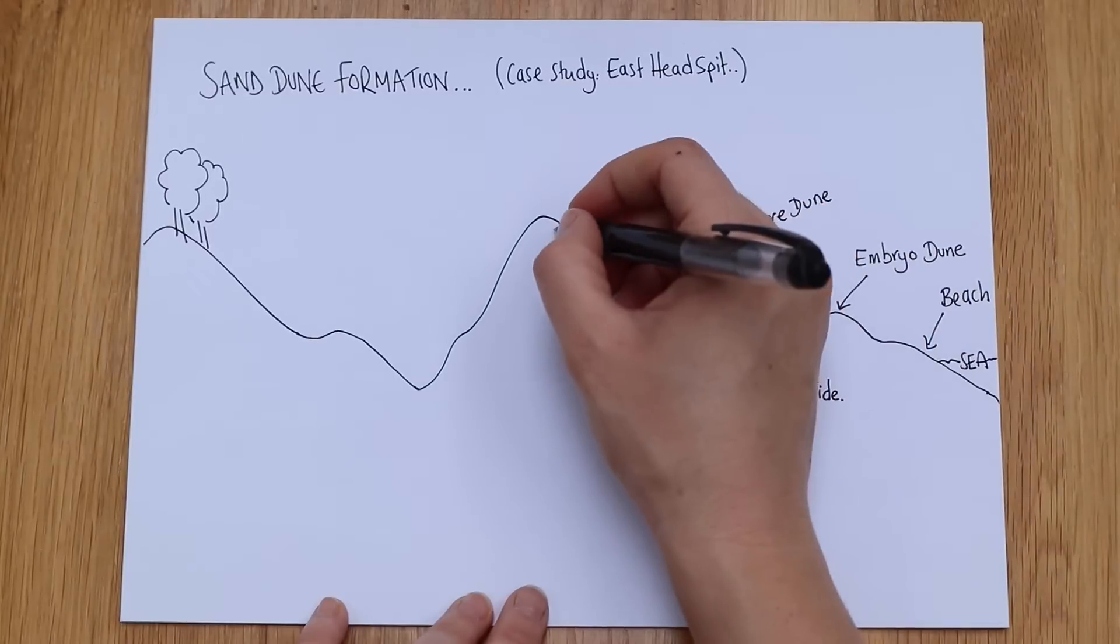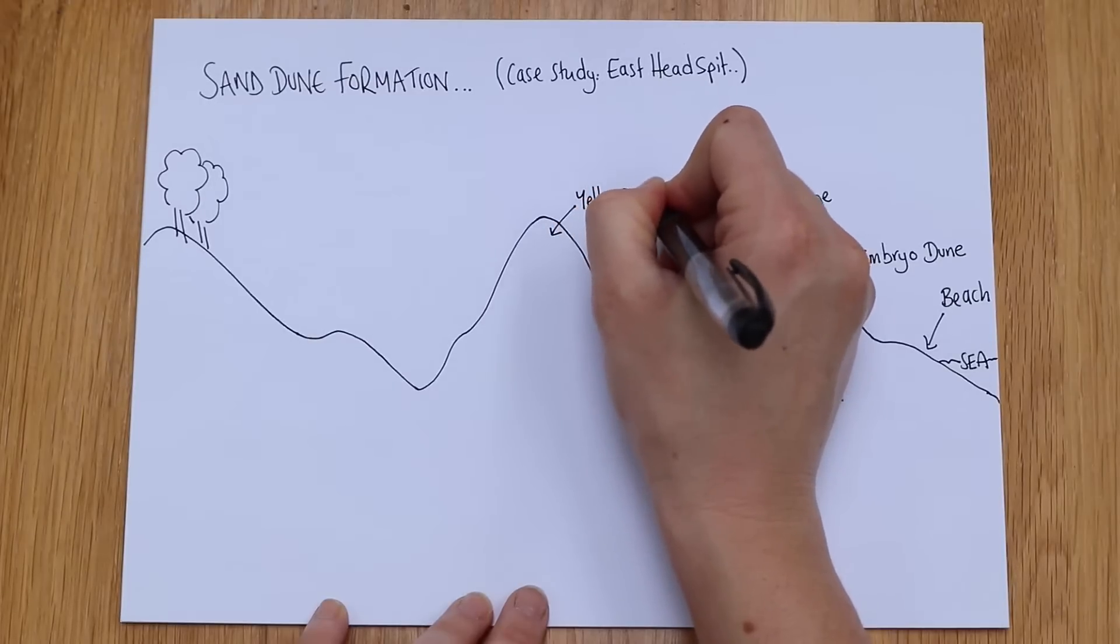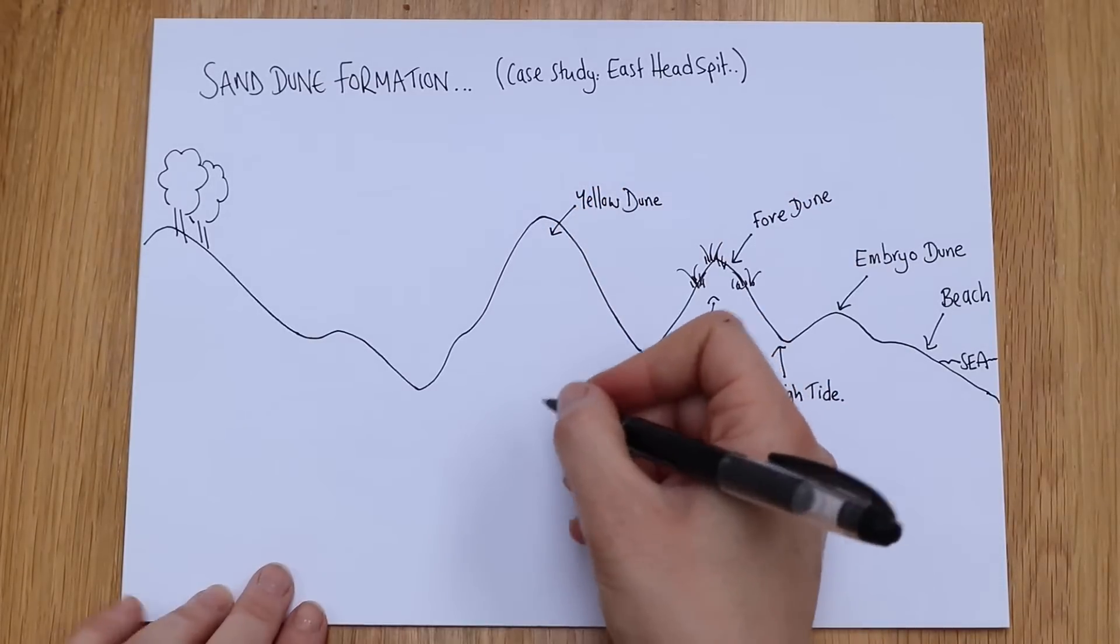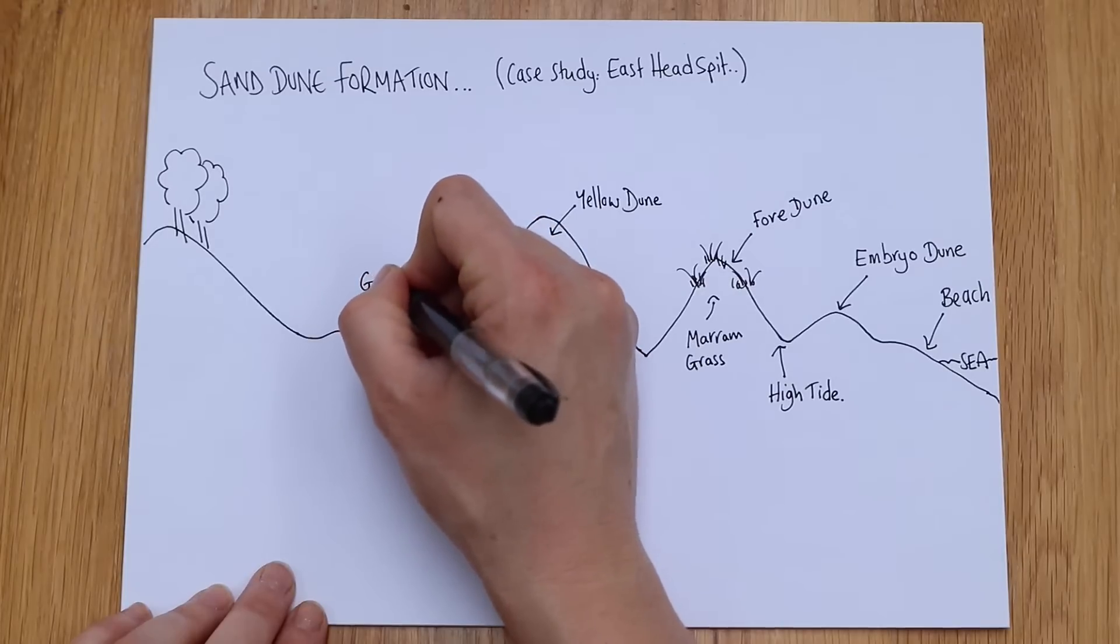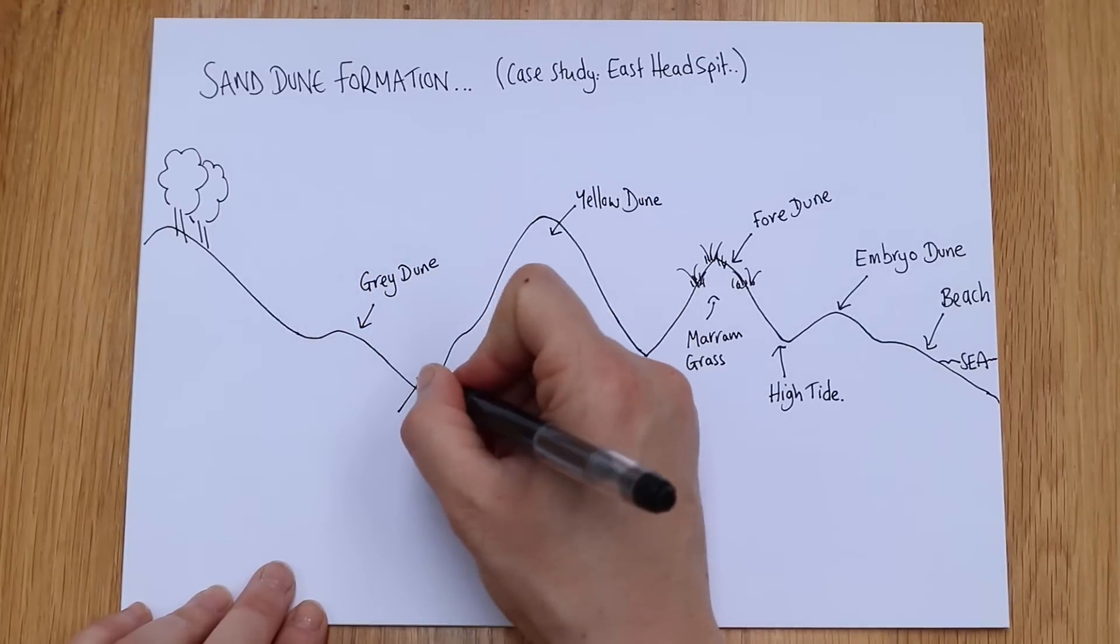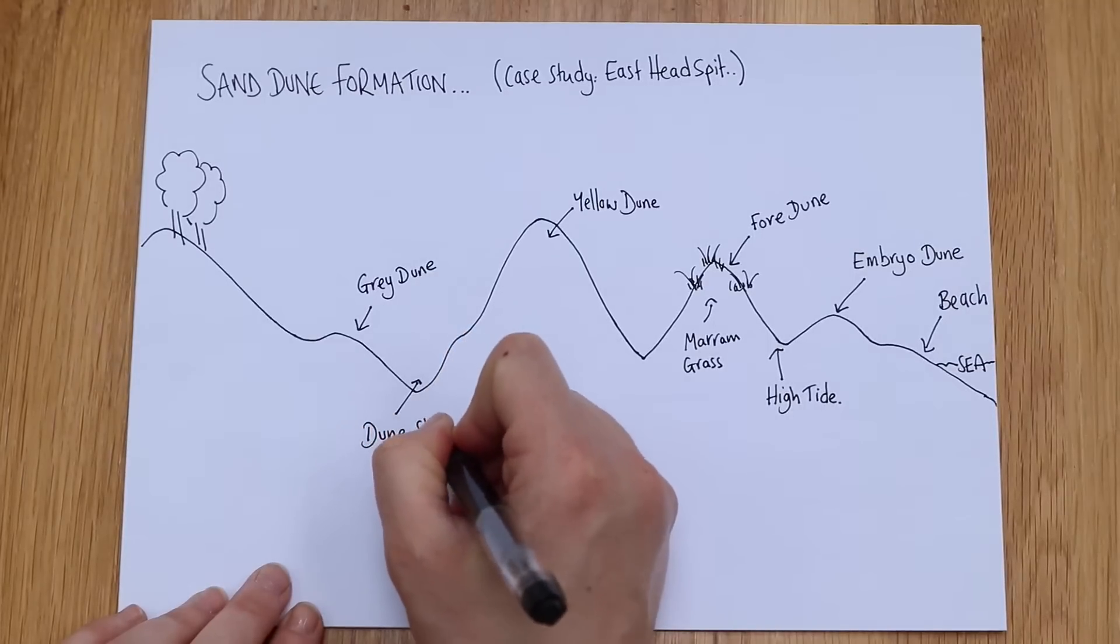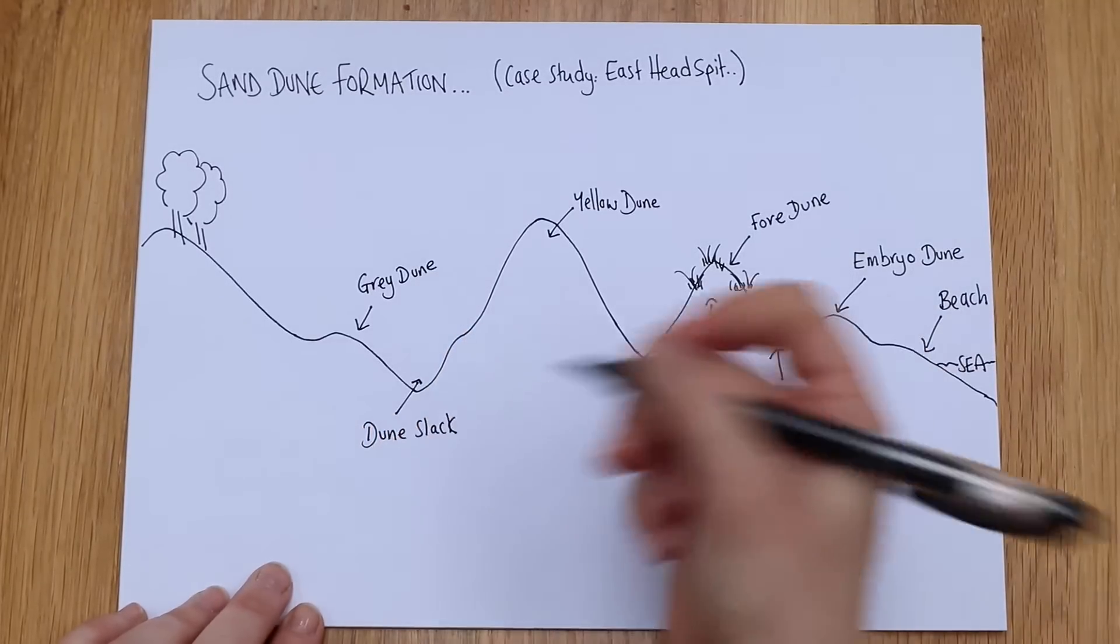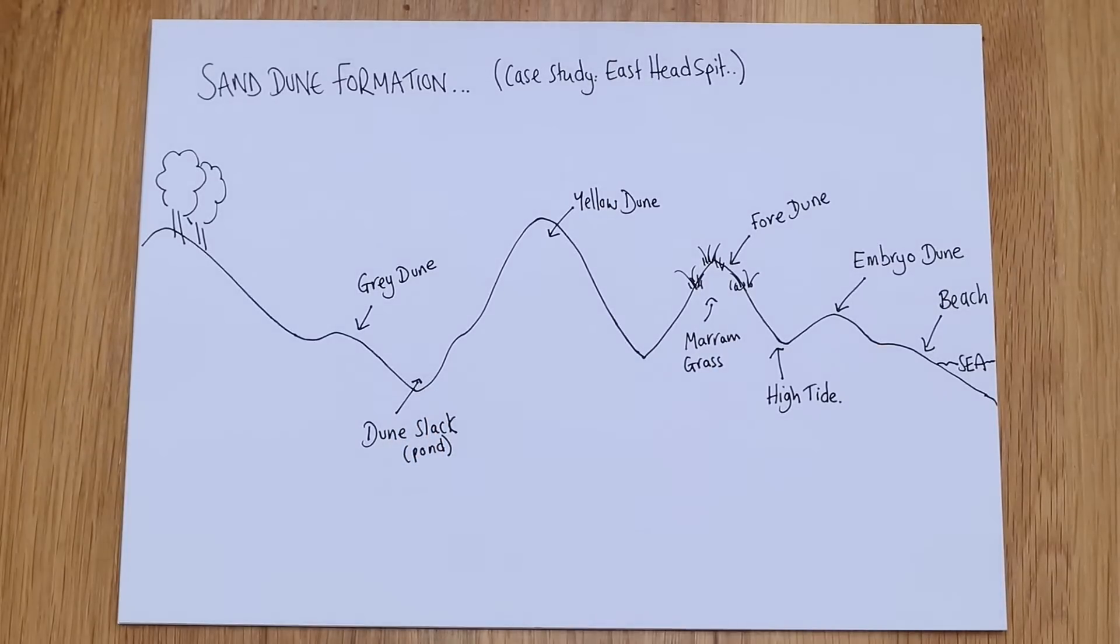And then further back we've got what we call our yellow dune, and then eventually back here we might have a gray dune. And then in this gap here this is called a dune slack. It's basically a pond.